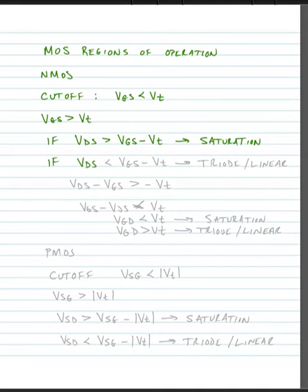If the drain-to-source is less than the gate-to-source minus the threshold voltage, the device is in the triode or linear region.